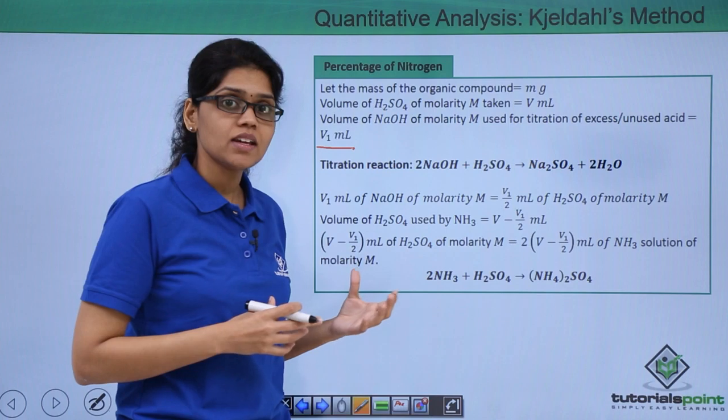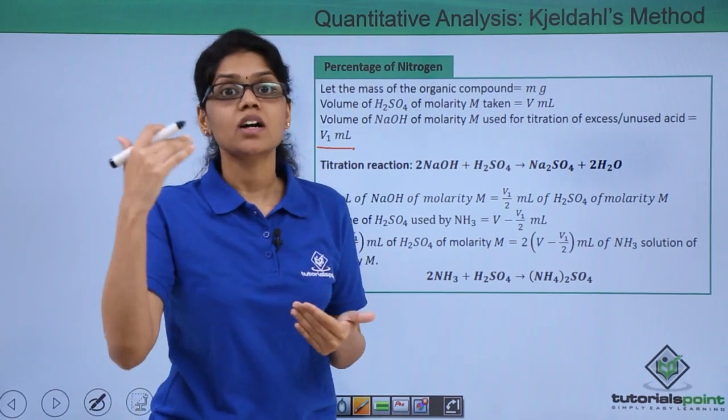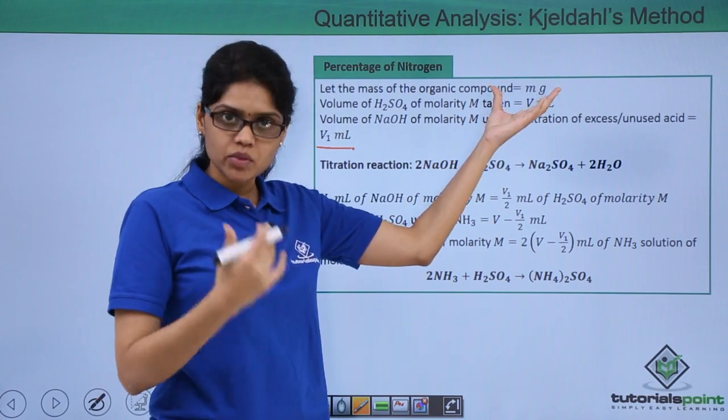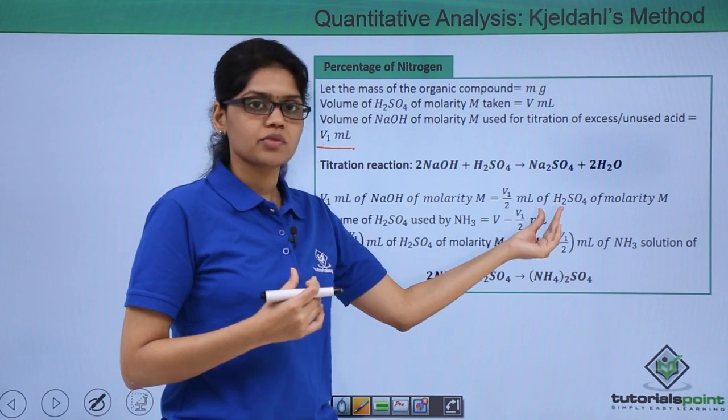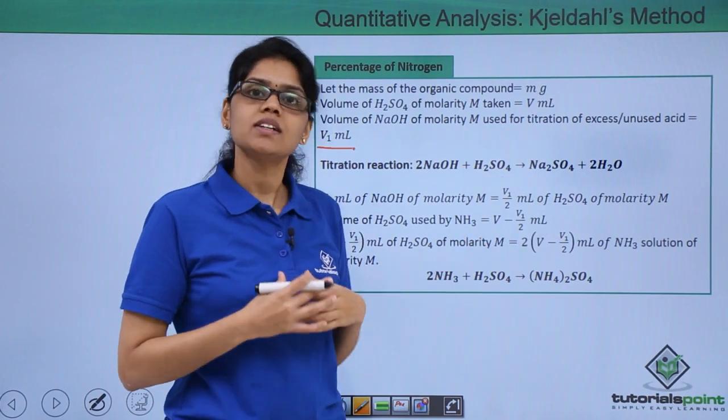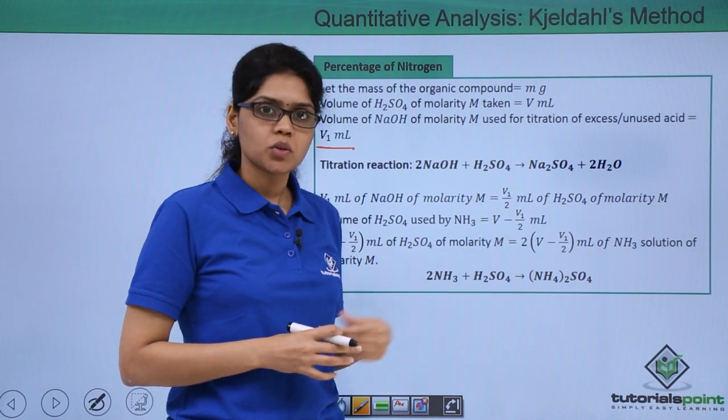Based on this you can see that the volume of sulfuric acid consumed in the reaction with ammonia would be the total volume of sulfuric acid that is taken minus the volume of H2SO4 that is used or consumed in the titration reaction. That is V - V1/2 ml.